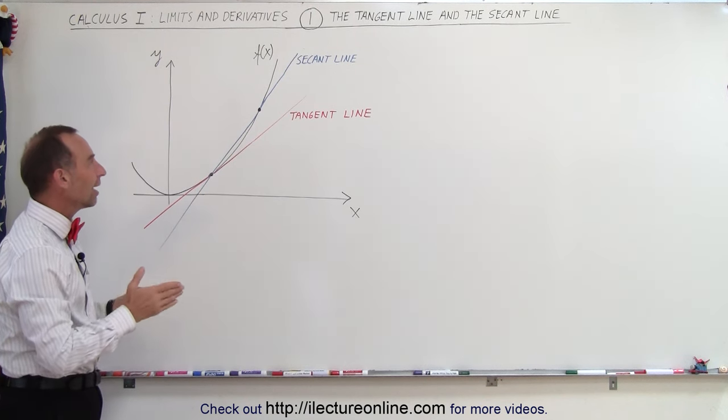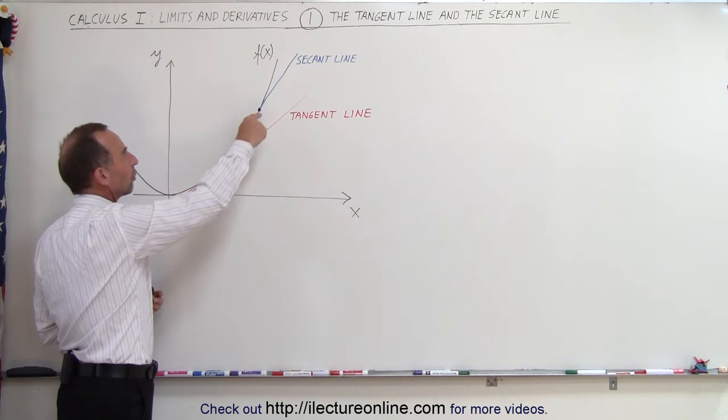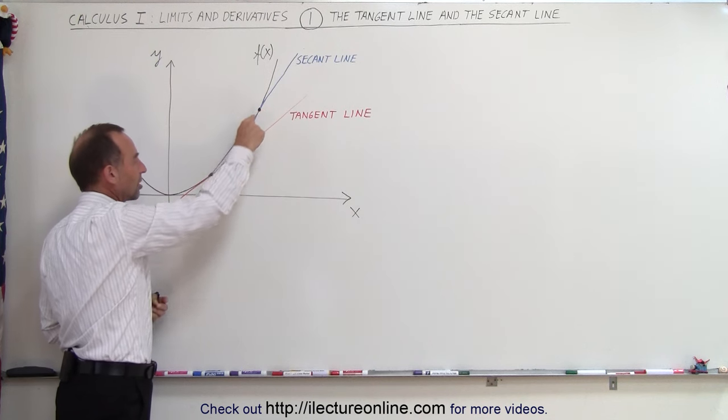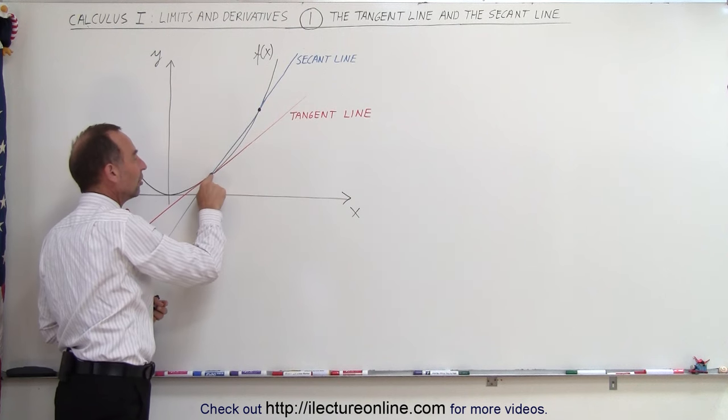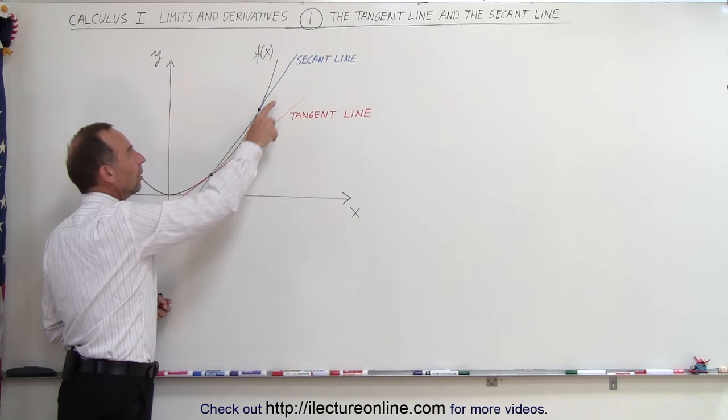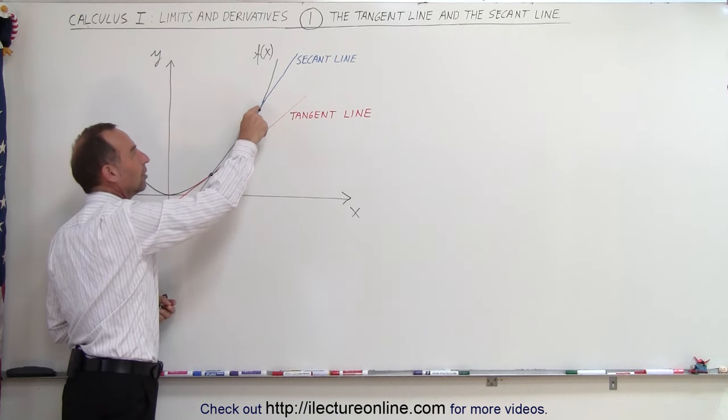A secant line is a line that runs along the function and will touch it in two places. One's here and one's there. So here you can see that both the secant line and the tangent line touch a function at this one location. But the secant line touches it also at another location.